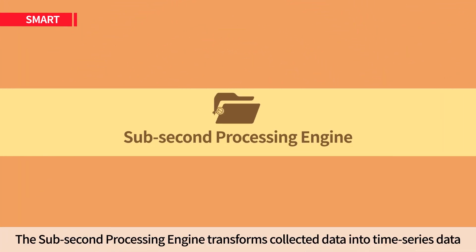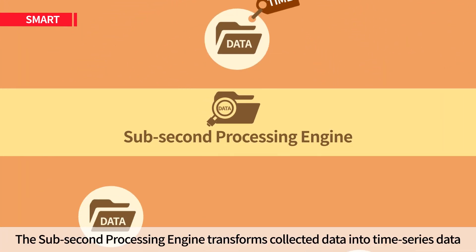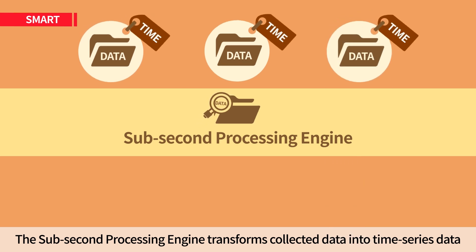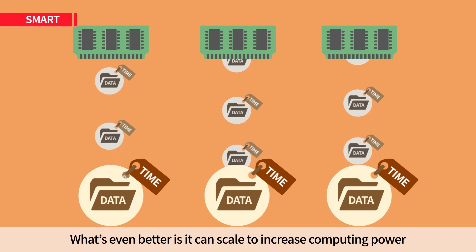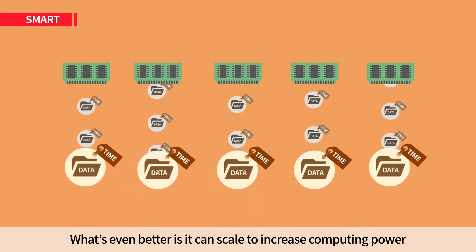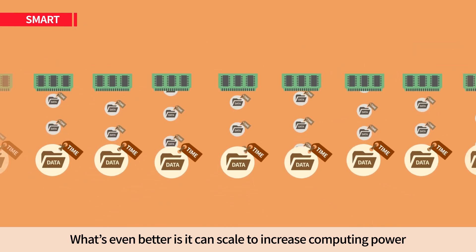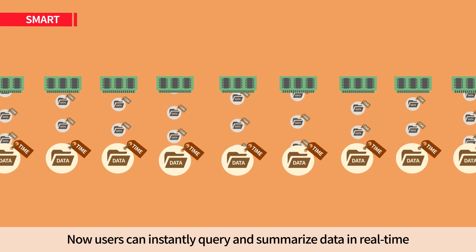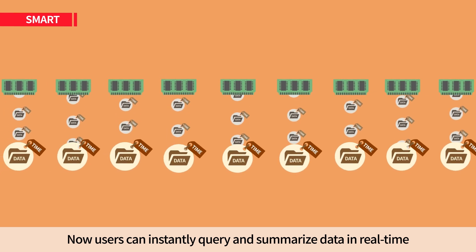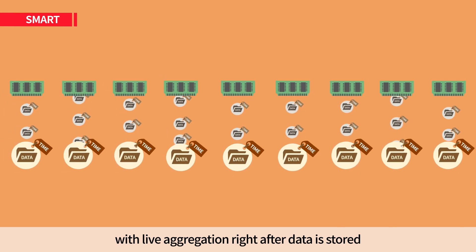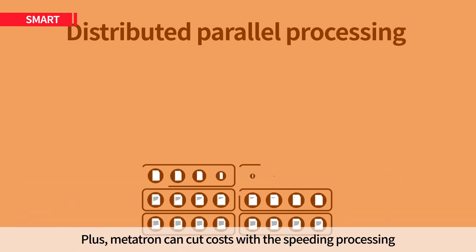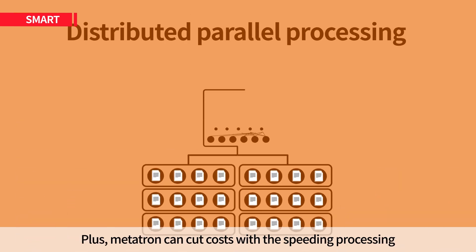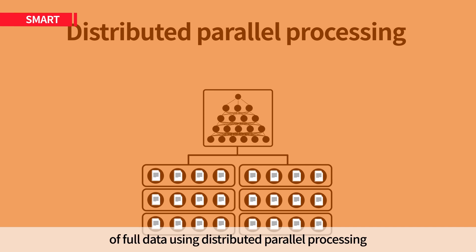The sub-second processing engine transforms collected data into time series data and supports in-memory acceleration. It can scale to increase computing power. Users can instantly query and summarize data in real time with live aggregation right after data is stored. Plus, Metatron can cut costs with the speeding processing of full data using distributed parallel processing.